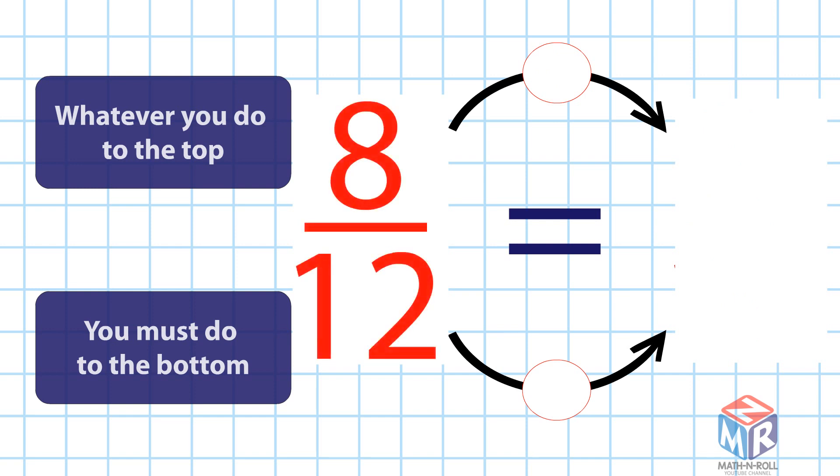Let's try another example. To find the equivalent of 8 over 12, we will divide by 4 to get 2 over 3.